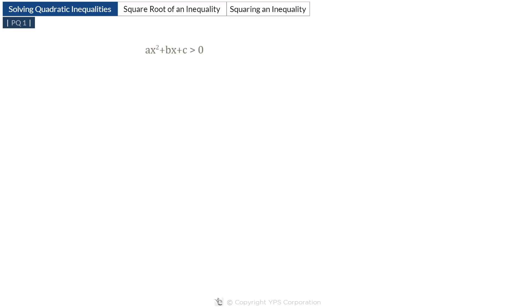Sometimes on the GMAT you may get inequalities involving x squared. Such inequalities in which the highest power of the variable x is 2 are known as quadratic inequalities. Examples of quadratic inequalities are shown here.